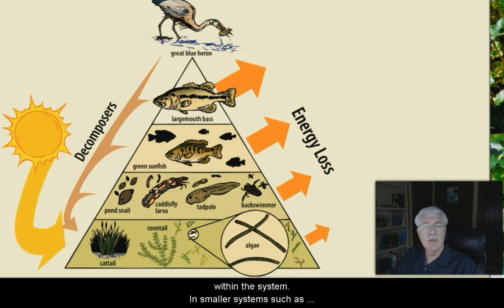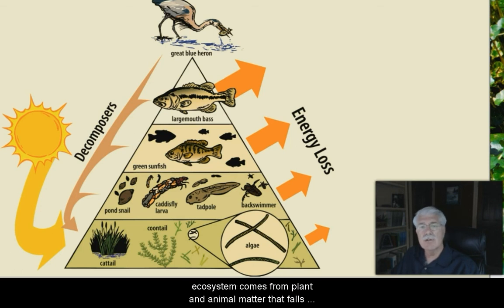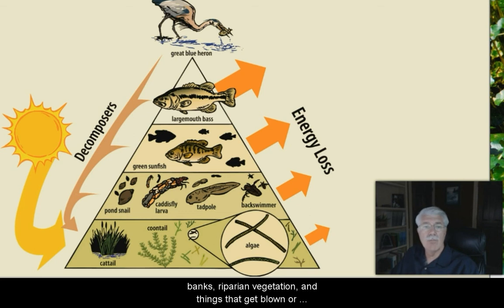In smaller systems, such as freshwater streams, particularly in the headwaters, most of the energy used in the ecosystem comes from plant and animal matter that falls into the water from the outside. This comes from the stream banks, riparian vegetation, from things that get blown or thrown into the stream.